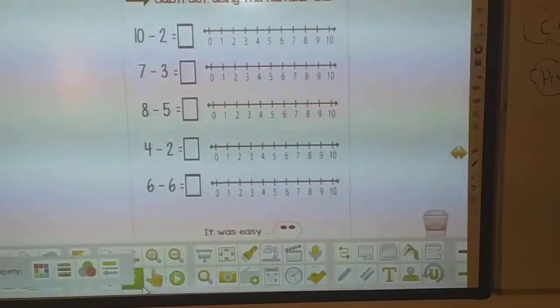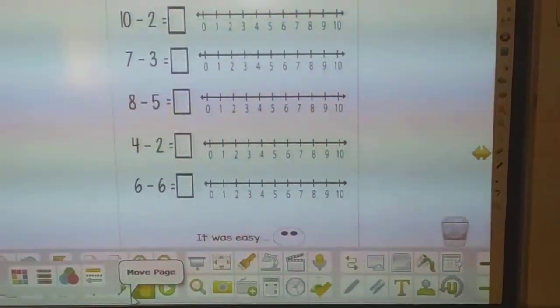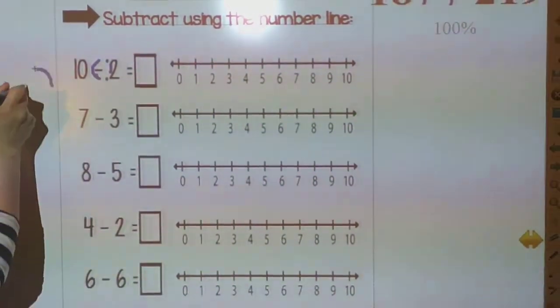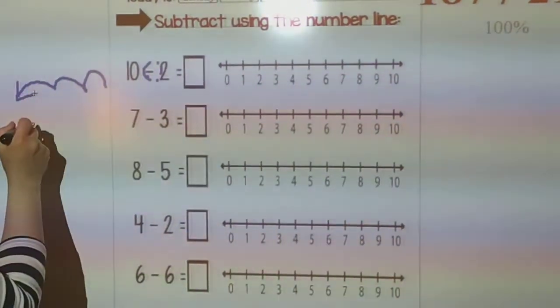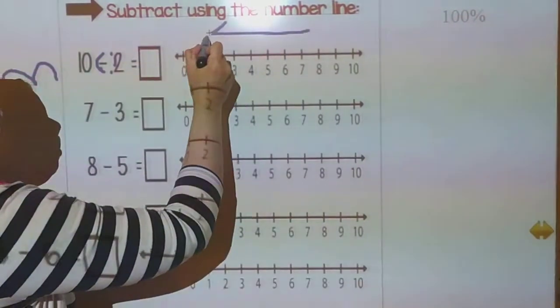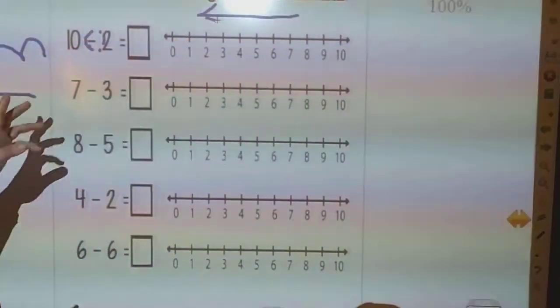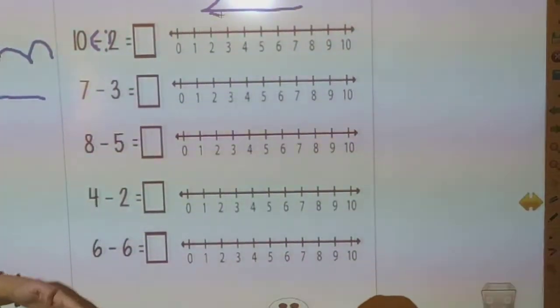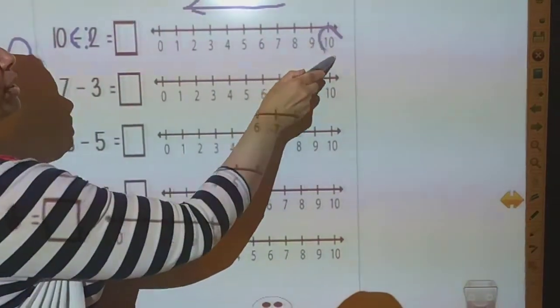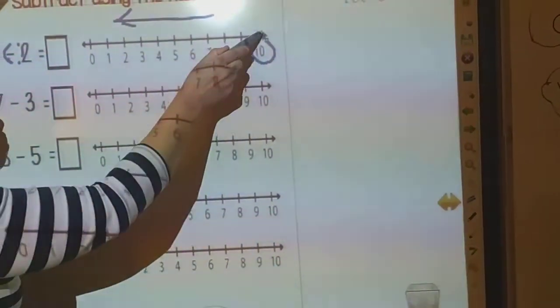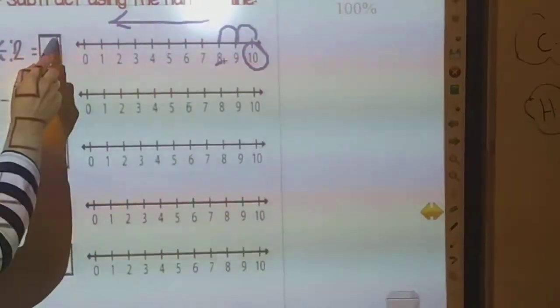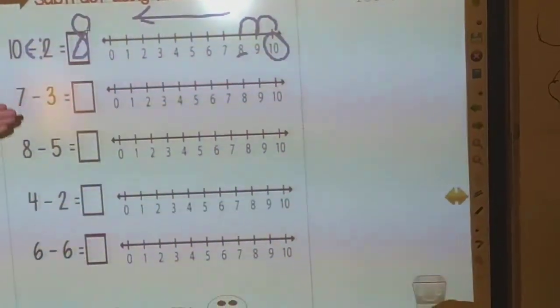Next question. It's subtract using the number line. Subtract means minus. And minus means going backward, going this way. We are going using the number line this way. So I will answer with you only the first one and you will complete the rest. Ten minus two. I will circle number ten and jump two steps. One and two. Where did I stop? I stopped at number eight. Please answer these.